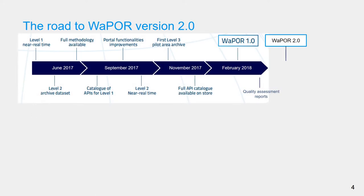In 2017, the first beta version of the WAPOR database was launched, starting with the continental level data at 250 meter resolution, to launching the first pilot area at 30 meter resolution in November 2017. Following internal quality assessments by project partners, WAPOR version 1.0 was launched in February 2018. Detailed quality assessment reports further informed the improvements made in developing version 2.0.